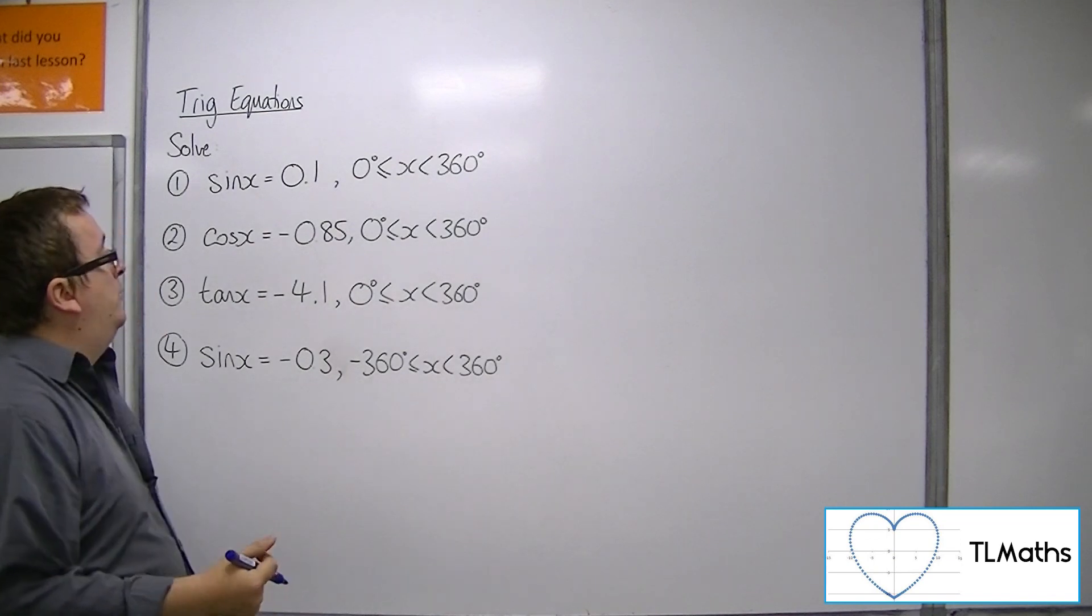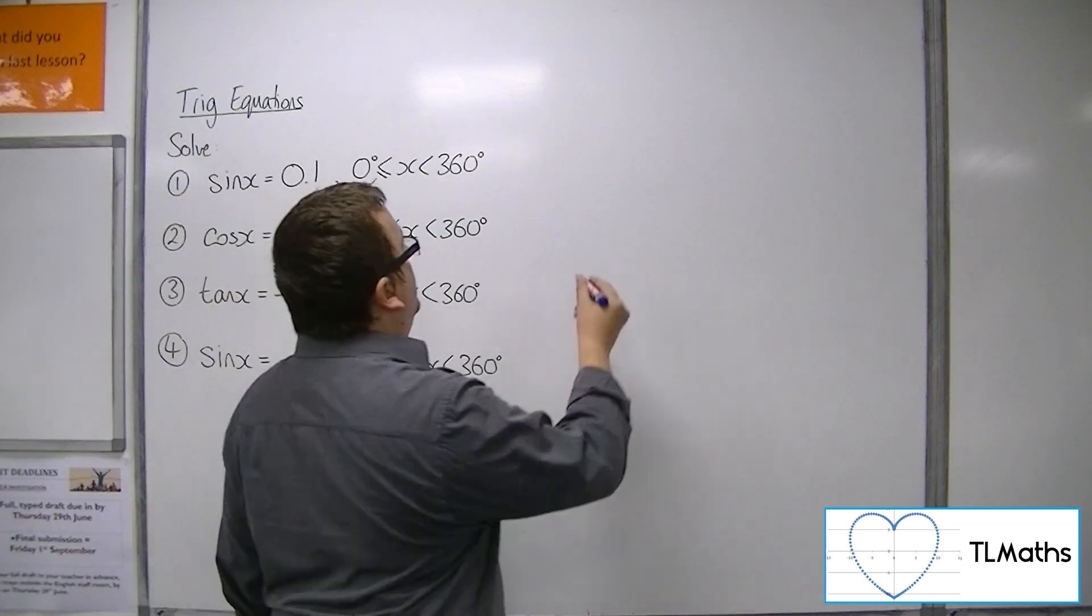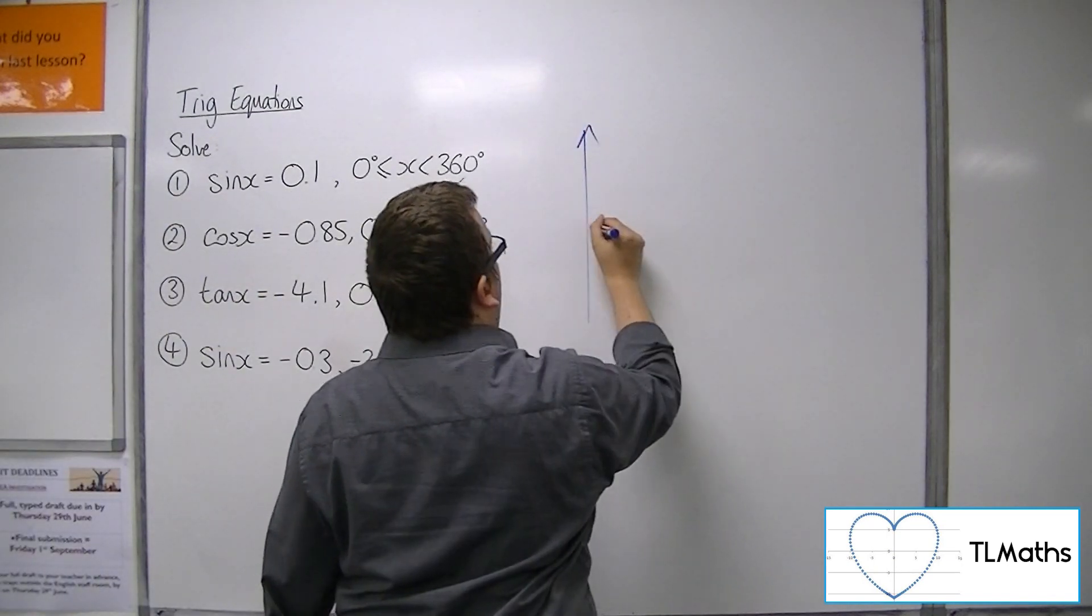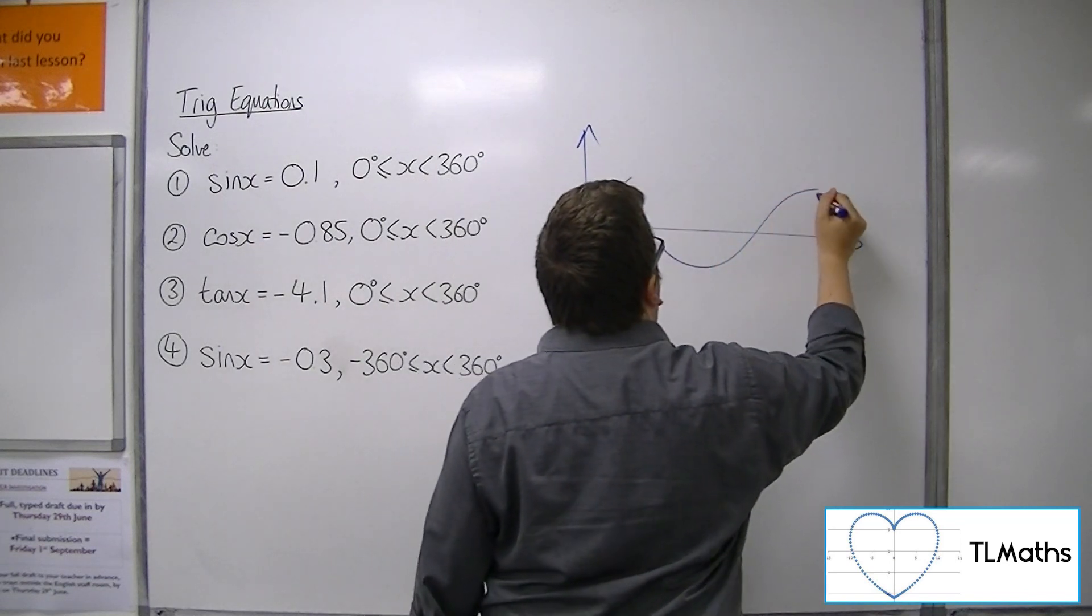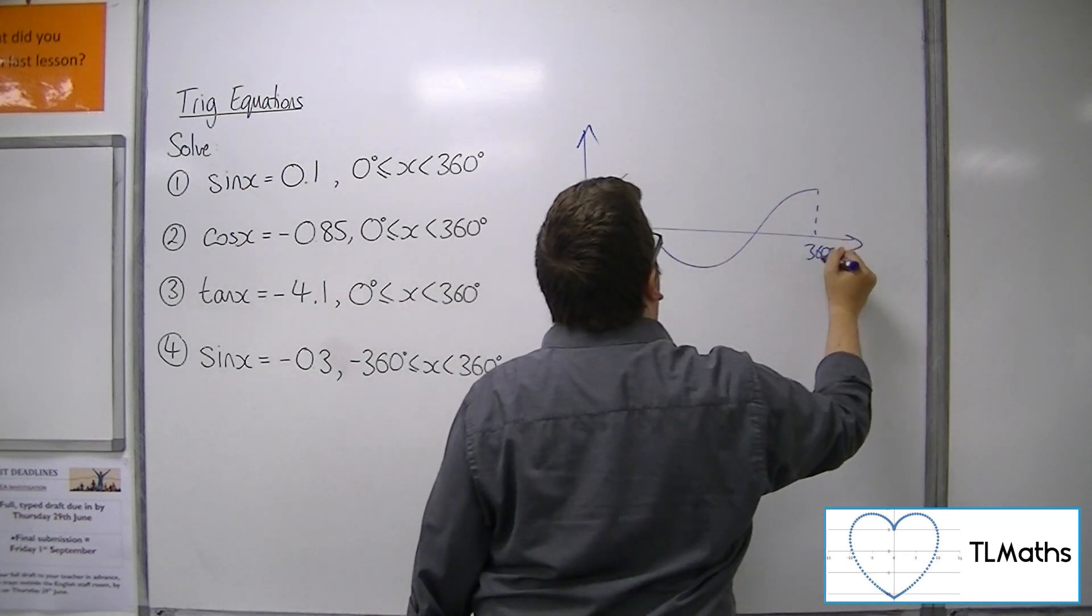Right, so number 2, cos x equals minus 0.85. So sketch of cos x. Sketch of cos, once again, doesn't need to be perfect.